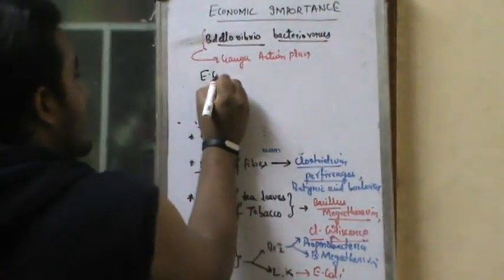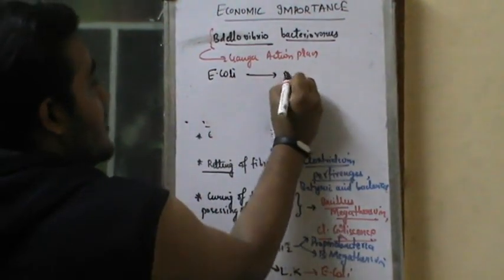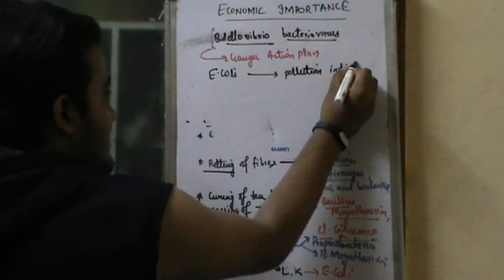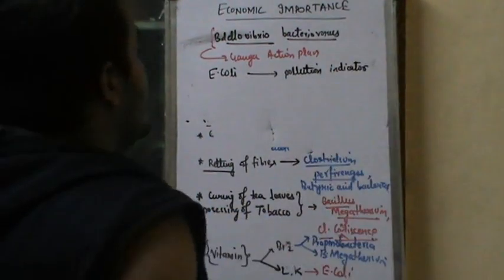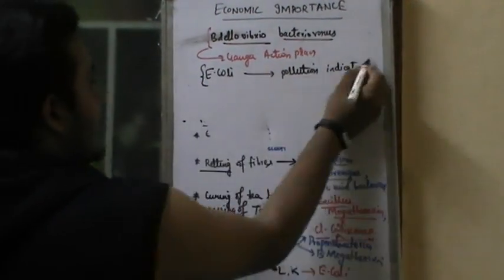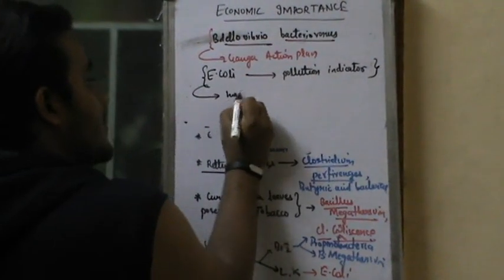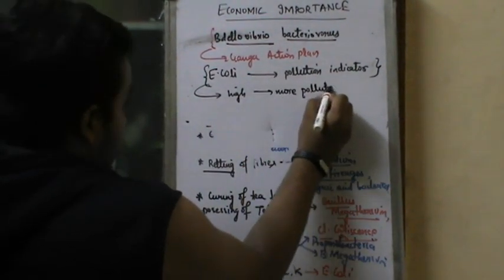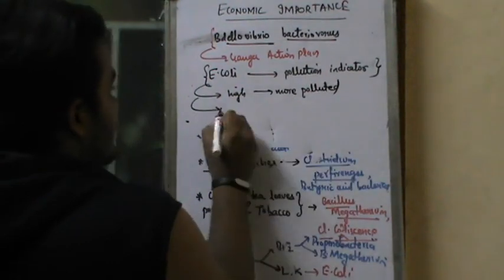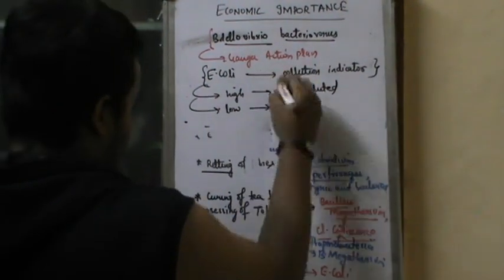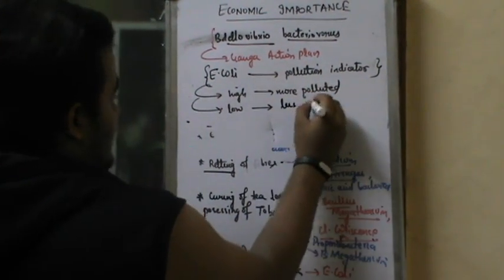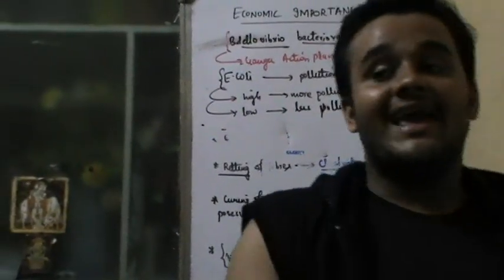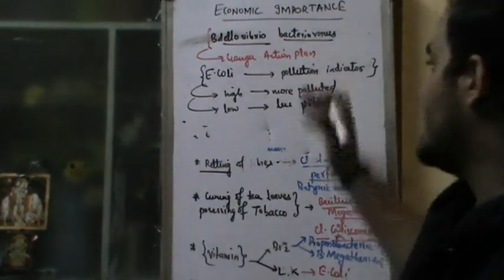E. coli is used as a pollution indicator. Higher content of E. coli means more polluted water; if the content of E. coli is low, the water is less polluted. These are points from NCERT practicals, NCERT liners, and NCERT examples which I have clubbed and given to you.